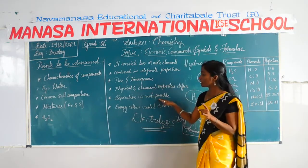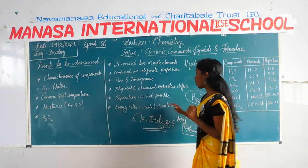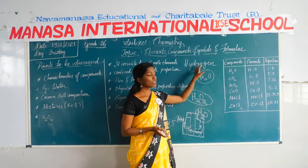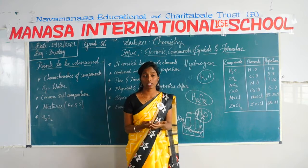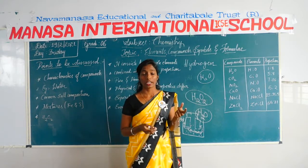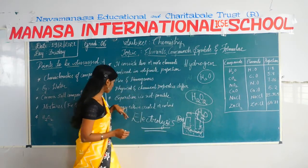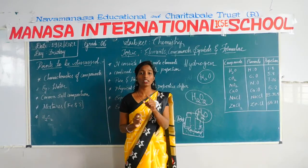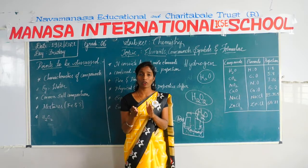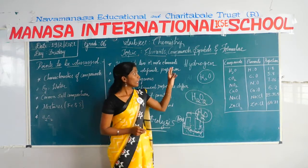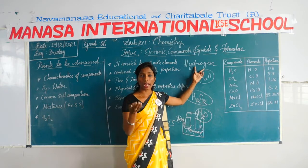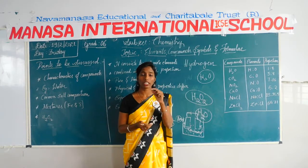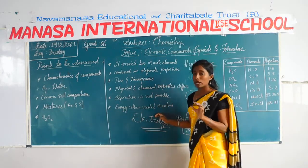The sixth characteristic: energy is either created or evolved. The components of water are hydrogen and oxygen. If they burn, that will produce light and energy — burning means energy is evolved. Energy is neither created nor destroyed; it is conserved. When hydrogen and oxygen combine to form water, the components give out energy while burning — that is energy being created or evolved. These are the characteristics of a compound.